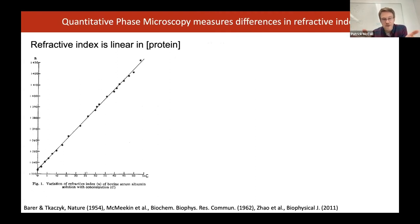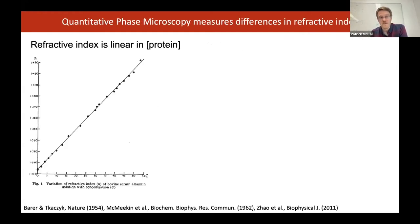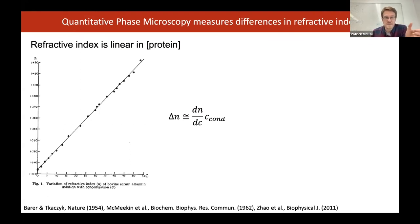I won't talk about how the microscope works because Susanna did an excellent job introducing that in the previous talk. But the whole reason we can see these droplets in bright field is because there's a difference in refractive index between the dilute phase outside and the condensed phase inside. The refractive index of a protein solution is actually linear in protein concentration — this has been known since the fifties. This means if I can measure the refractive index of my solution, I know what protein concentration gives rise to that refractive index difference.